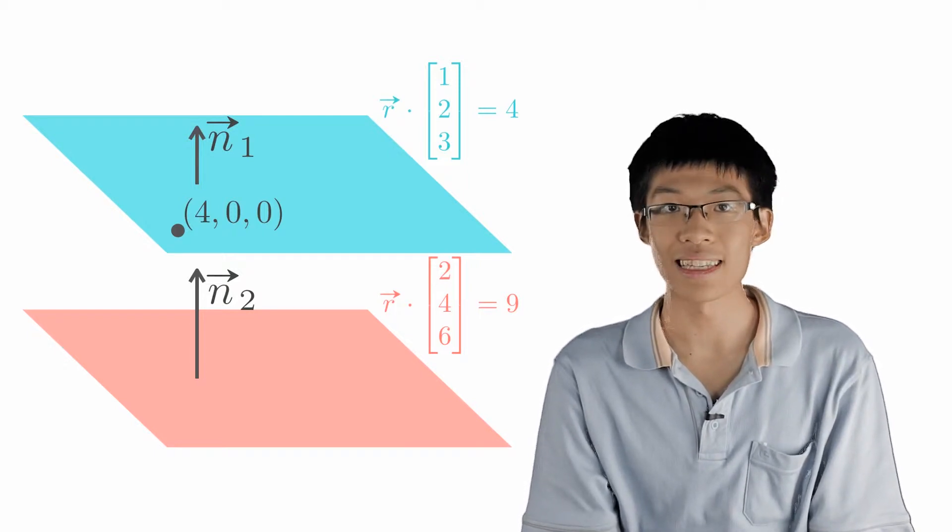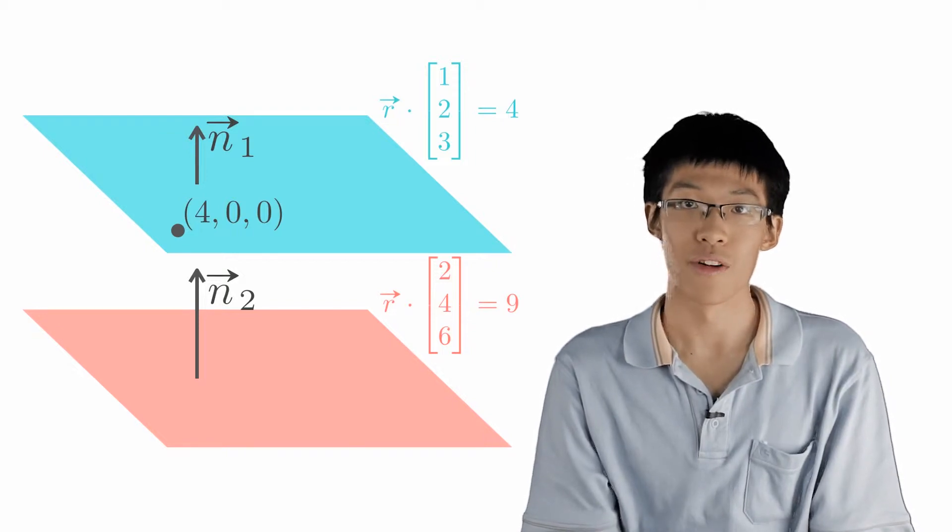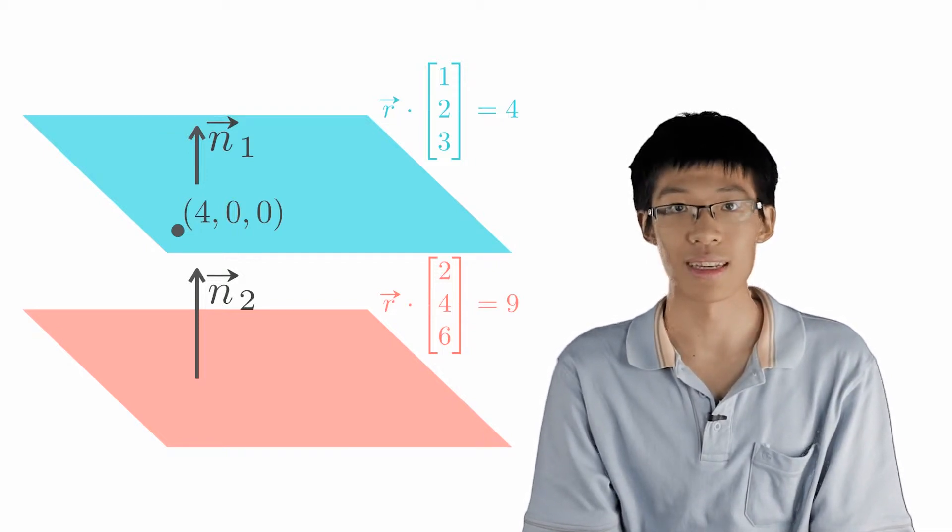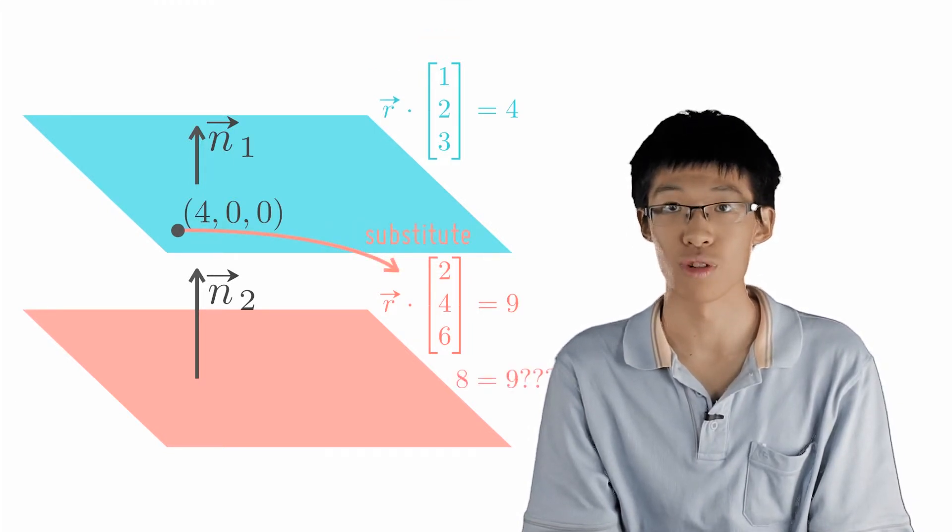The easiest way to find such a point is to set y equals to 0 and z equals to 0. From there, we calculate that x is equal to 4. Then we substitute the point into equation 2, and we get 8 equals to 9.